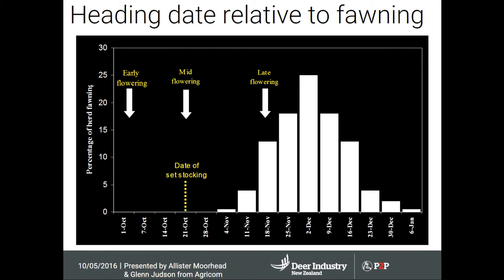Grass is grass — it doesn't matter what variety it is. It breaks down in the rumen in a very similar way, and it has one characteristic that's really hard to manage: by the time you start set stocking, it's ready to go to seed. You've been dealing with that virtually the whole time you've been deer farming. It is worthwhile understanding that there are different types out there, and for different landscapes and fawning patterns, there may be serious advantages in understanding the roles of different flowering dates on your fawning blocks.